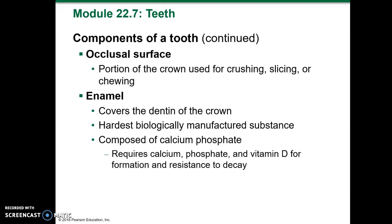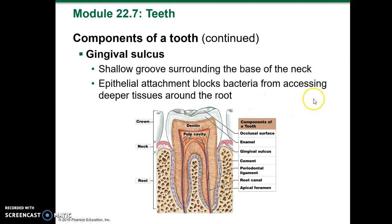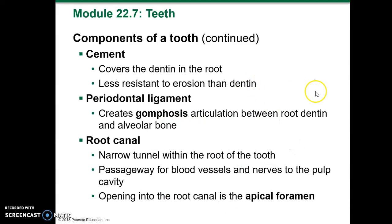Enamel is composed of calcium phosphate and requires calcium phosphate and vitamin D for formation and resistance to decay. The gingival sulcus is a shallow groove that surrounds the base of the neck. The epithelial attachment blocks bacteria from accessing the deeper tissues around the root. The cementum covers the dentin in the root; it's less resistant to erosion than the dentin. The periodontal ligament creates a gomphosis articulation between the root dentin and the alveolar bone.